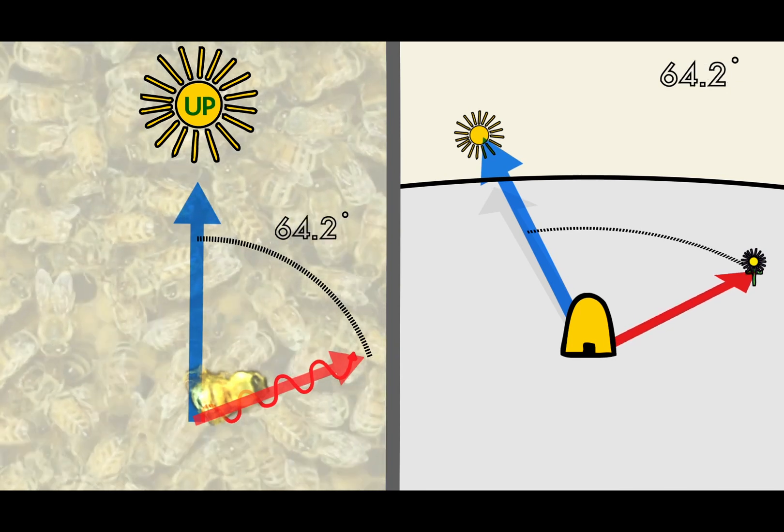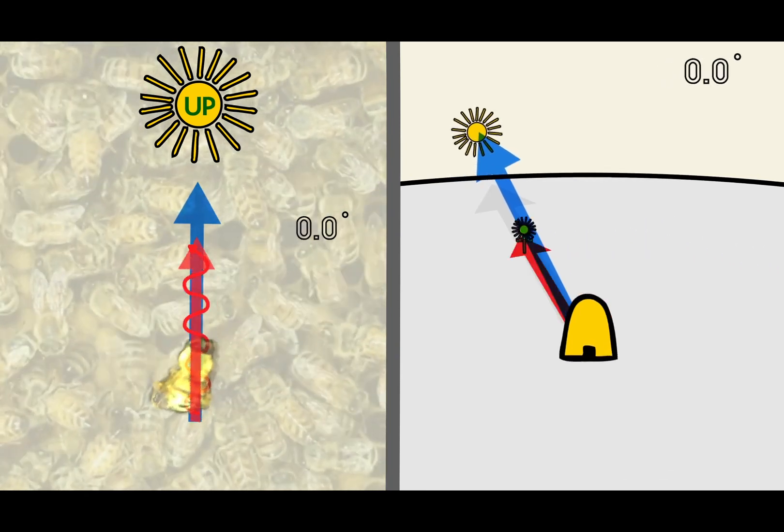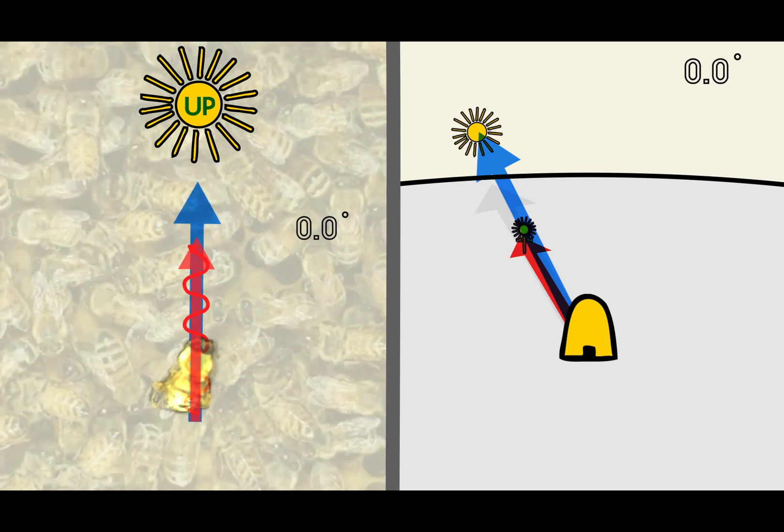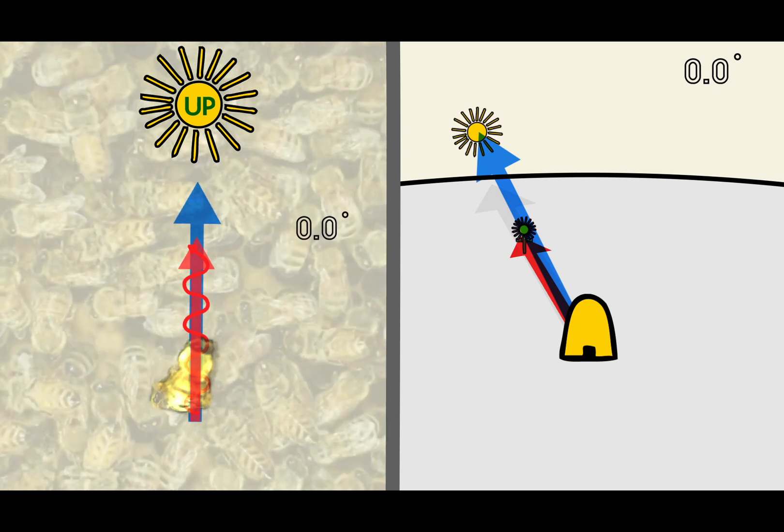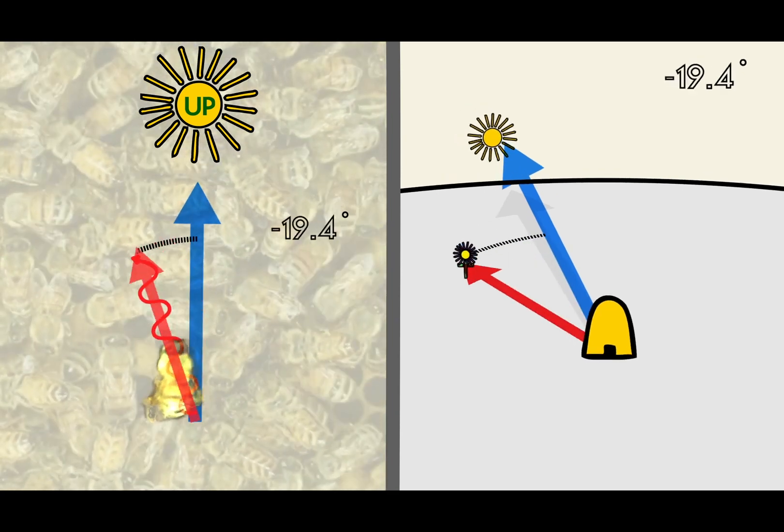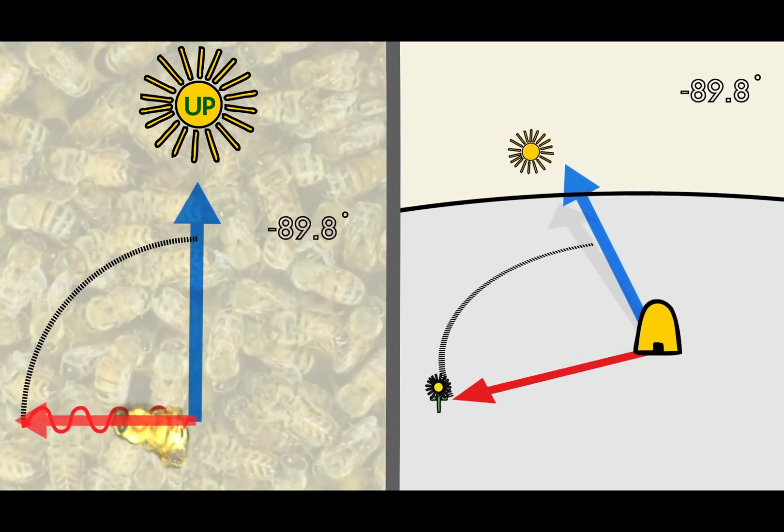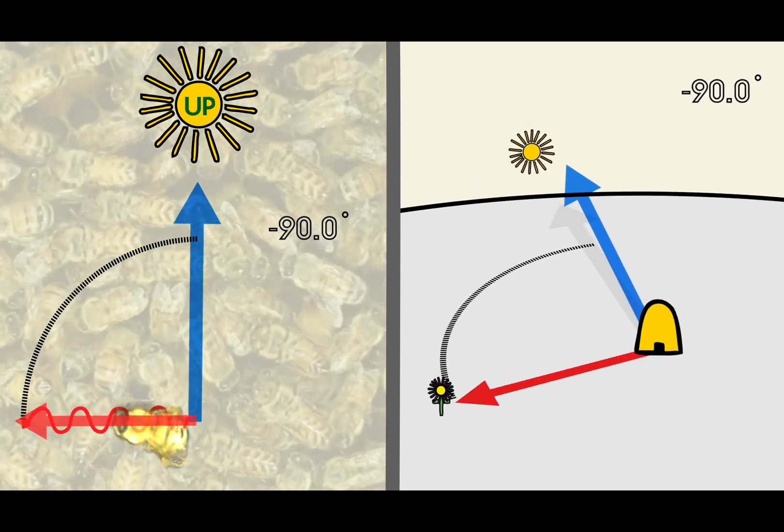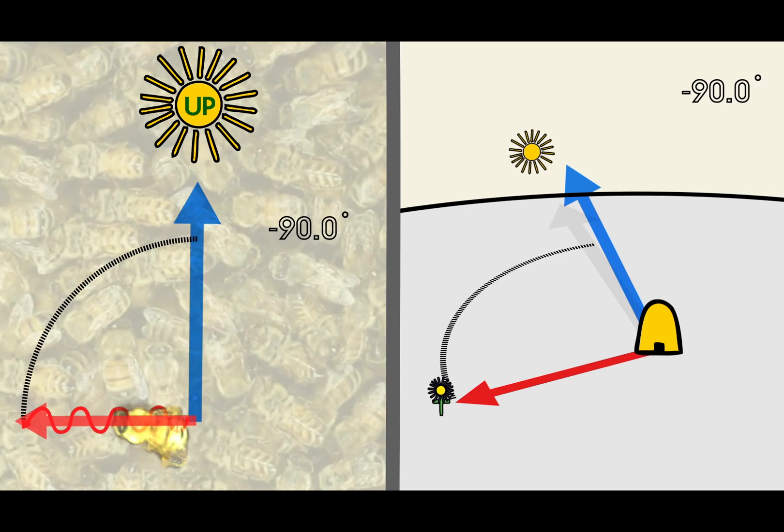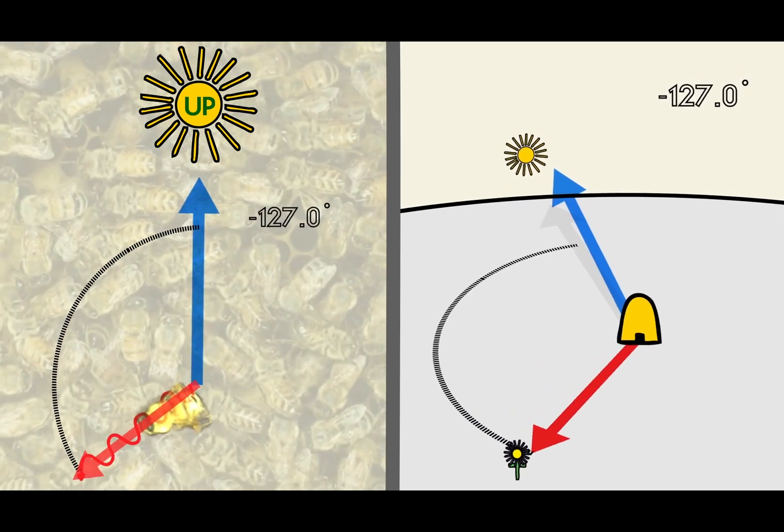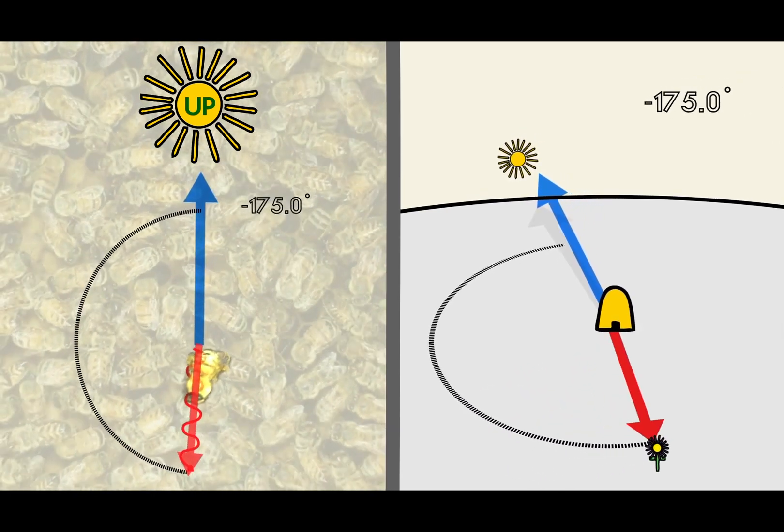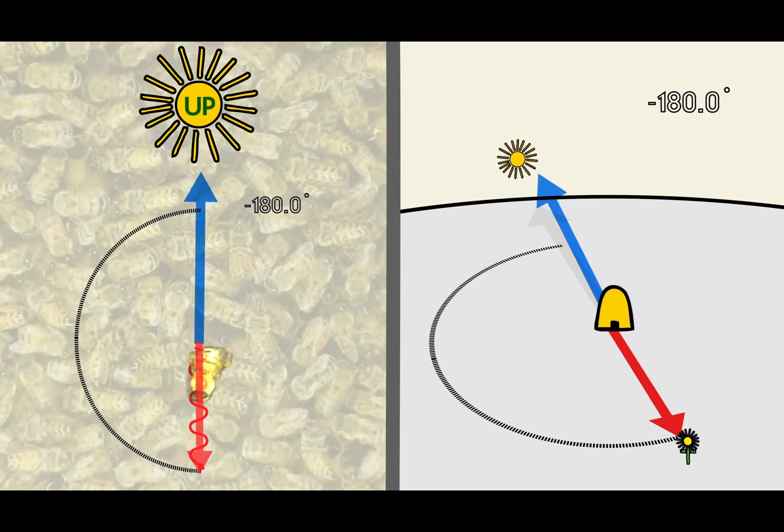So if the bee dances directly upward, other bees know that they can find flowers by flying directly towards the sun. If a bee dances 90 degrees to the left, then bees leaving the hive should fly 90 degrees to the left of the sun. A bee angling its dance towards the ground will let others know to fly directly away from the sun.